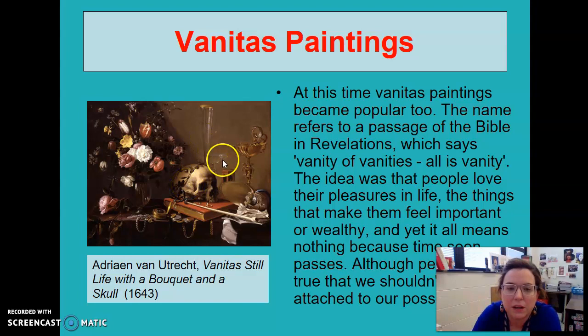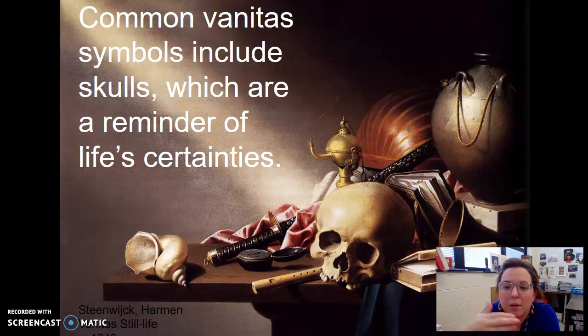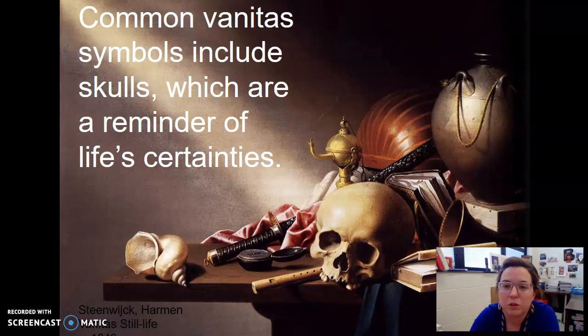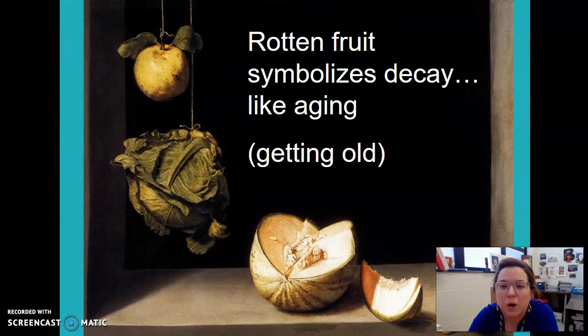Here's a cool one — you still have the repeating skull, the repeating glassware and containers, a book, a clock, and flowers. So there are repeating objects throughout all still life. Common Vanitas symbols include skulls, which are a reminder of life's certainties — unfortunately we will all pass away one day. Rotten fruit symbolizes decay, like aging and getting older. Water.